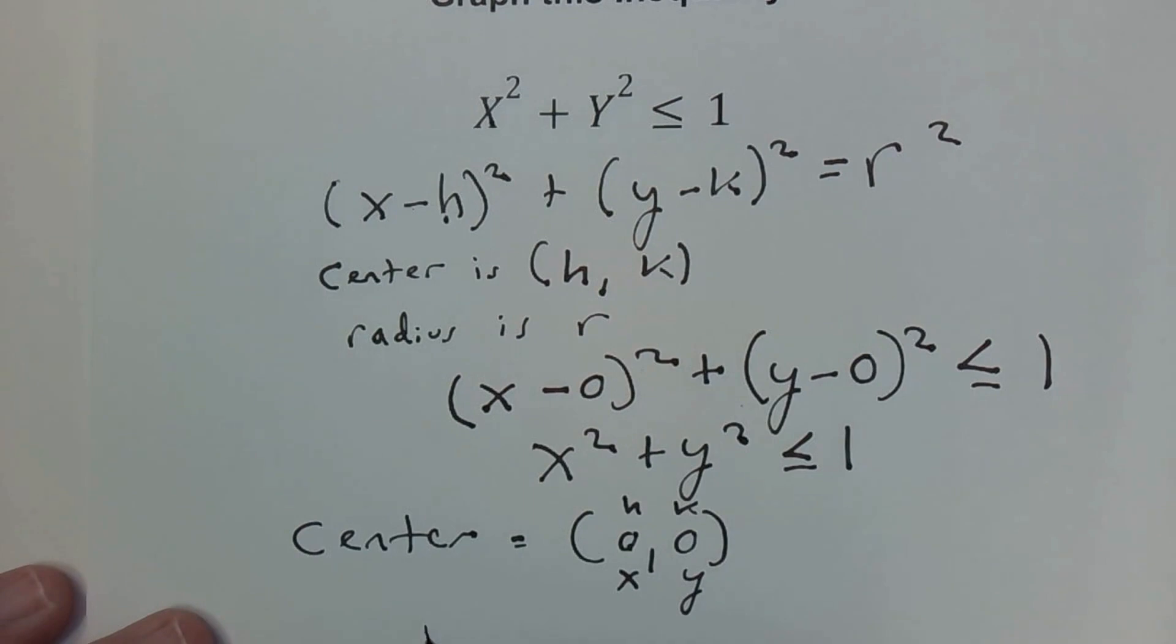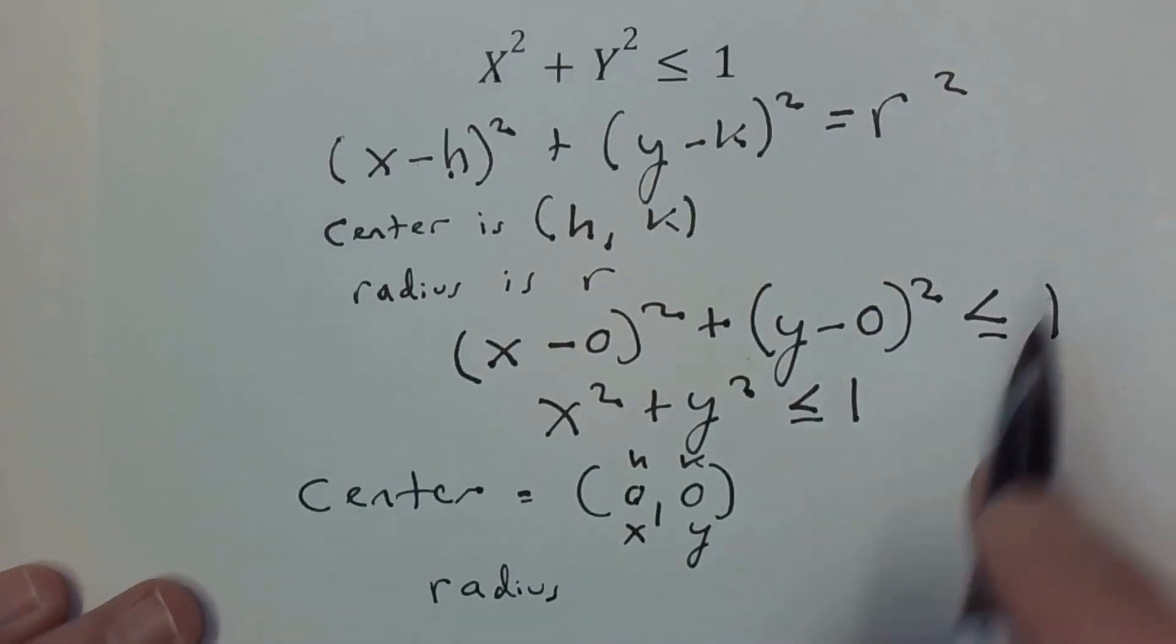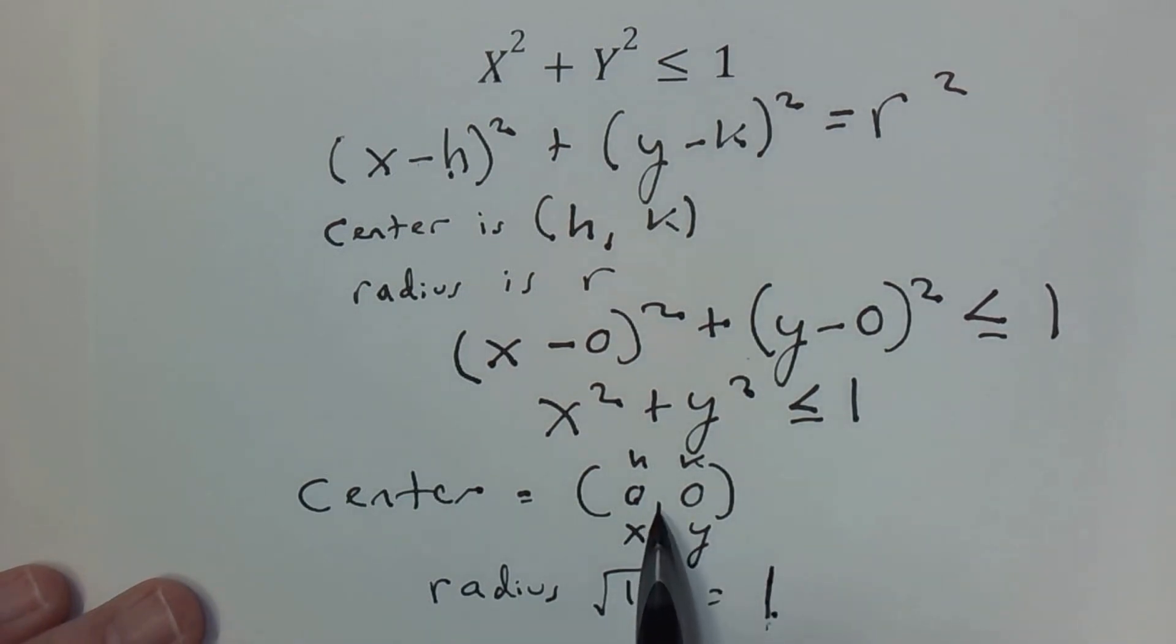The only thing left to find out is what's the radius. That would be our 1, and you could take the square root of it, but the square root of 1 is 1. So we know now our radius is 1 and our center is (0, 0).